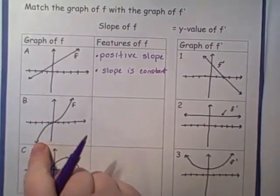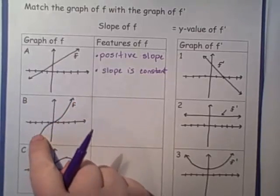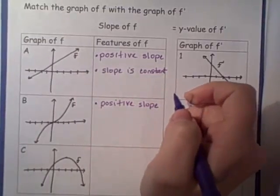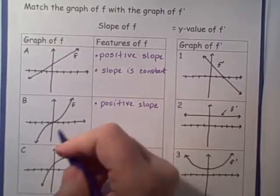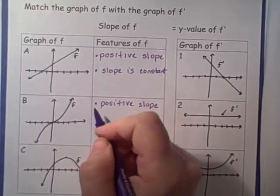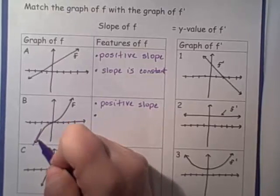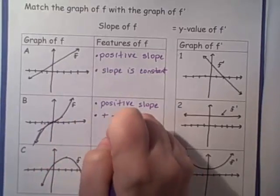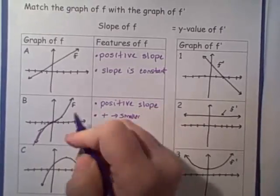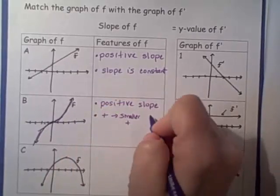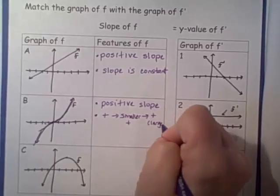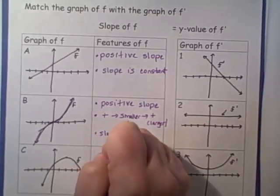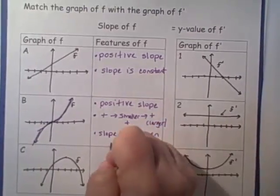Let's look at graph B. Our f is increasing throughout the whole graph, so we have positive slope. If we draw in tangent lines, over on the left the slope is positive, and as we move towards the right it gets smaller but still positive. So we go from a positive to a smaller positive, back to a larger positive — meaning our slope is decreasing, then increasing.